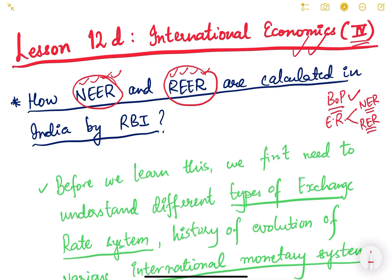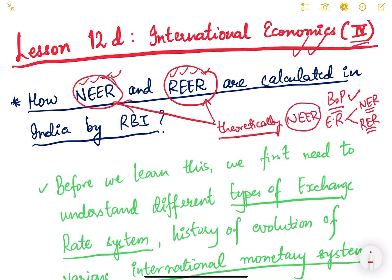We have seen the theoretical foundations of NEER and REER in the previous video — how, for textbook purposes, NEER and REER are calculated by taking the weighted sum of the different exchange rates of our trading partners. But it is also important to know how it is calculated in real life by the RBI, and once you know this, it will be easy to understand any question or concept related to NEER and REER.